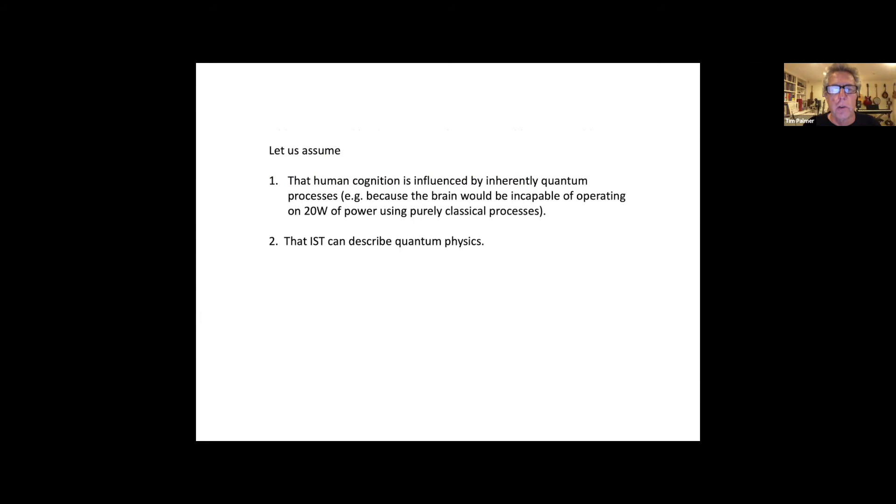I am going to assume that human cognition is influenced by inherently quantum processes. I personally believe that the fact that the brain operates on 20 watts of power, unlike say 20 megawatts which a supercomputer runs on, actually requires it to run on inherently quantum processes. I don't think it would be possible for the brain to do what it does using purely classical processes if it only operates on 20 watts. I will assume that and secondly assume that Invariant Set Theory can describe quantum physics.